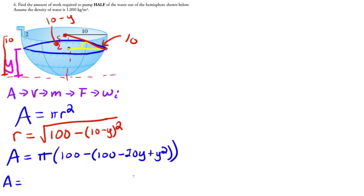Okay, so then the area of the slab is pi times 100 minus 100, so this is just equal to positive 20y minus y squared. And so then this is in units of square meters.